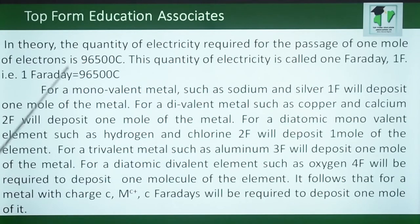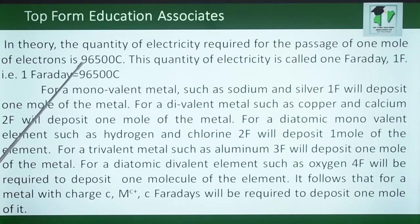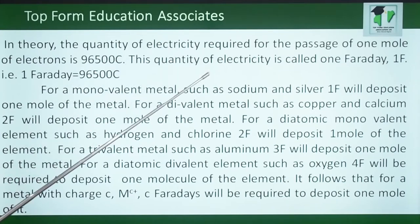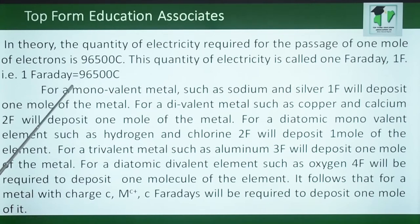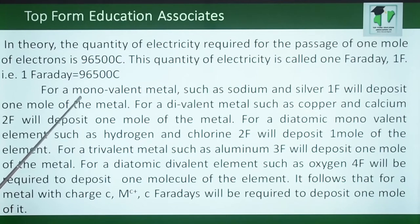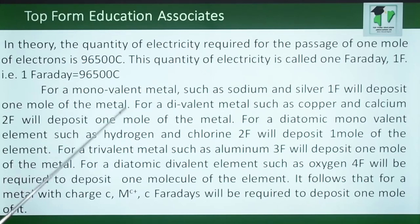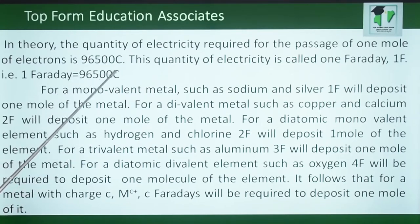In theory, the quantity of electricity required for the passage of one mole of electrons is 96,500 coulombs. This quantity of electricity is called 1 Faraday (1F). For a monovalent metal such as sodium and silver, 1 Faraday will deposit 1 mole of the metal, meaning you need 96,500 coulombs to obtain 1 mole of sodium or 1 mole of silver.